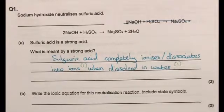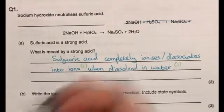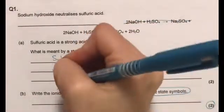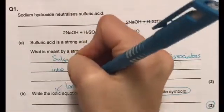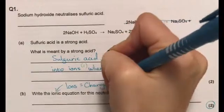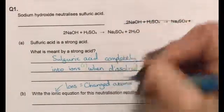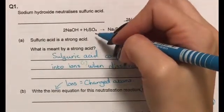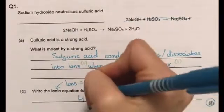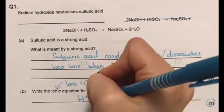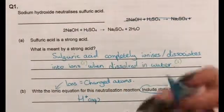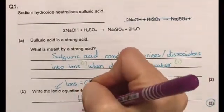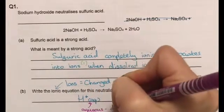So the next question asks us to write the ionic equation for this neutralization reaction, include state symbols. Now we can see it's out of two marks. I know it means we need to use ions or charged atoms. Now we should know that acids dissociate when they dissolve in water creating H+ ions and obviously if that's dissolved in water your state symbol is going to be AQ which stands for aqueous, dissolved in water.